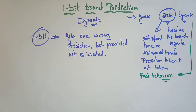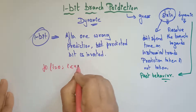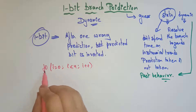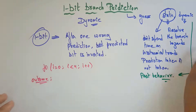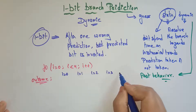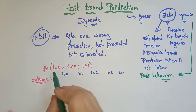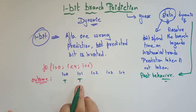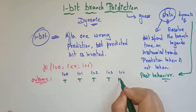Let me take a simple for loop: for(i = 0; i < 4; i++). If this loop is executed, what will be the outcome? When i = 0, the condition is true — branch is taken. When i = 1, branch is taken. When i = 2, branch is taken. When i = 3, branch is taken. When i = 4, the condition is false — branch is not taken. This is the expected output.